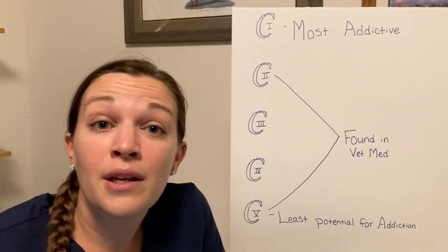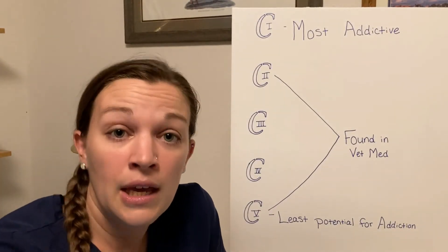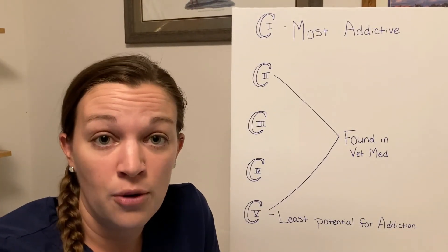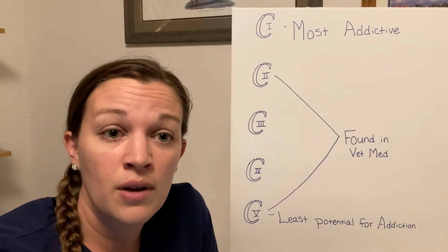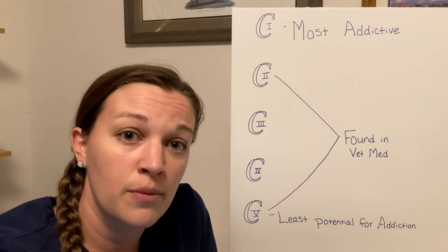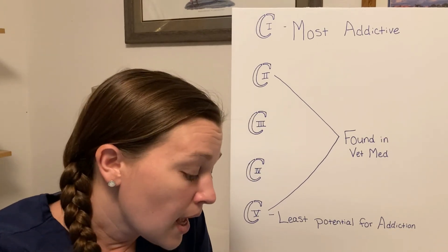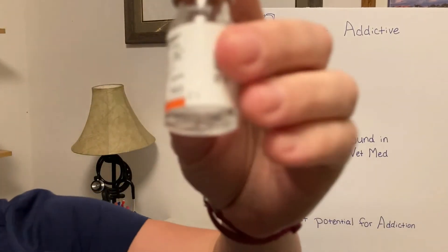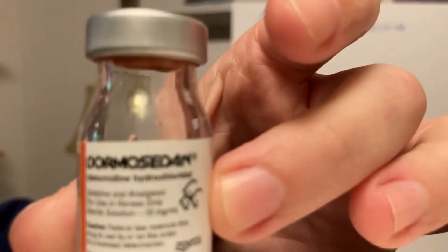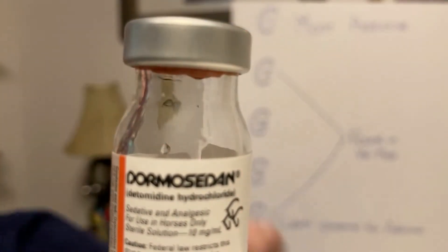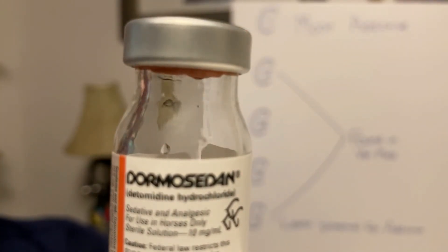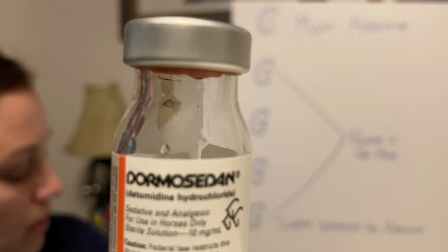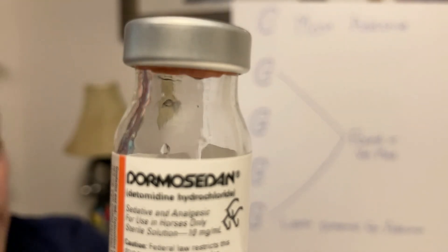One that we commonly use for equine sedation is detomidine, and the trade name is Dormosedan, which is commonly used. This one is also not controlled. Take a close look at that label — you'll also see that there is no little C or Roman numeral on that one.